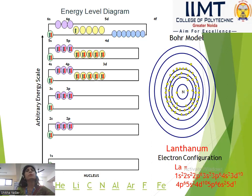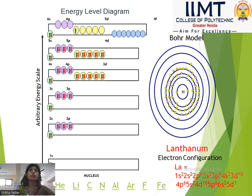Lanthanum has atomic number 57 and symbol La. It is an f-block element. In the first shell we have 2 electrons, in the second shell we have 8, then 18 and 18, and so on.